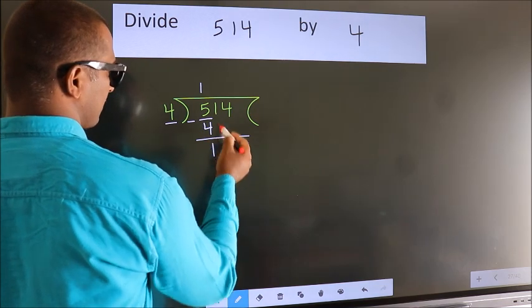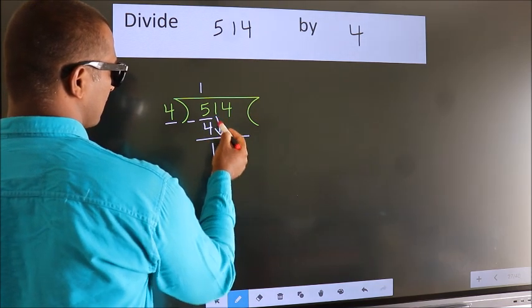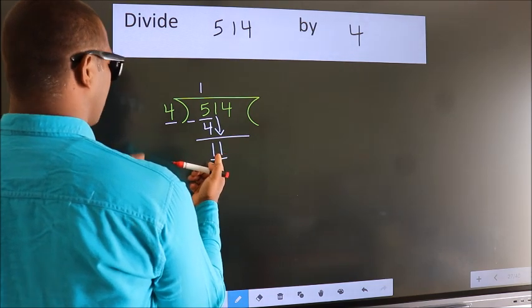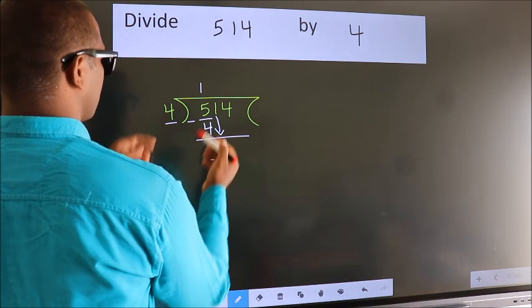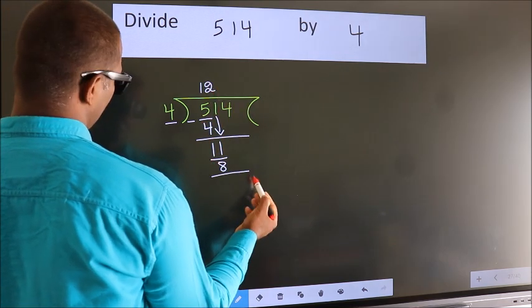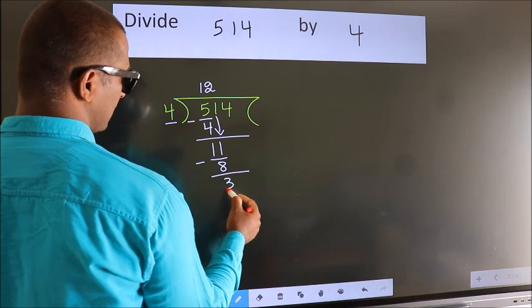After this, bring down the beside number. So, 1 down. So, 11. A number close to 11 in 4 table is 4 twos 8. Now we subtract. We get 3.